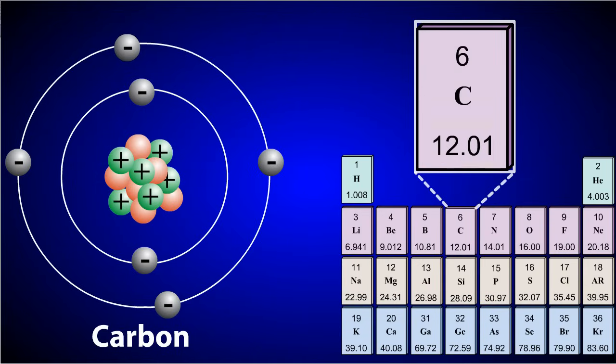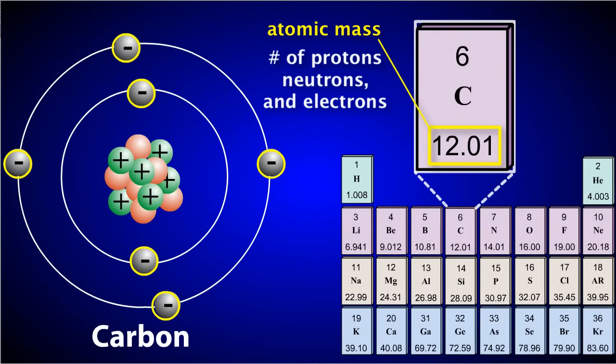The number that appears below the element symbol is called the atomic mass. The mass of an atom depends on the number of protons, neutrons, and electrons it contains.